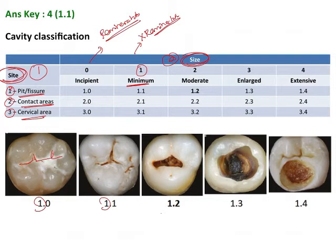Size 2 is moderate. Here the tooth is affected; however, it is still strong enough to support a restoration.